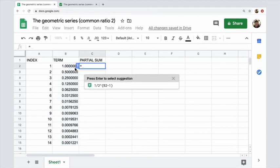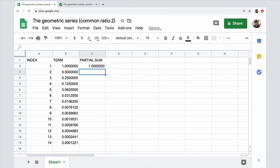And we will drag that down and we get our terms. First partial sum equals just the term. Second partial sum equals previous partial sum plus current term, plus drag.